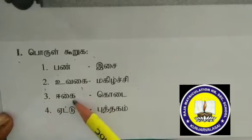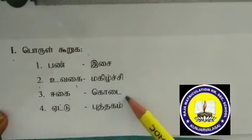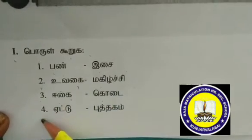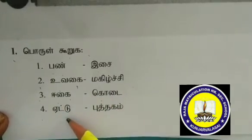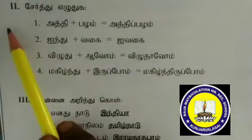Third one: Eai — Kodai. Fourth one: Eetu — Puttaham.